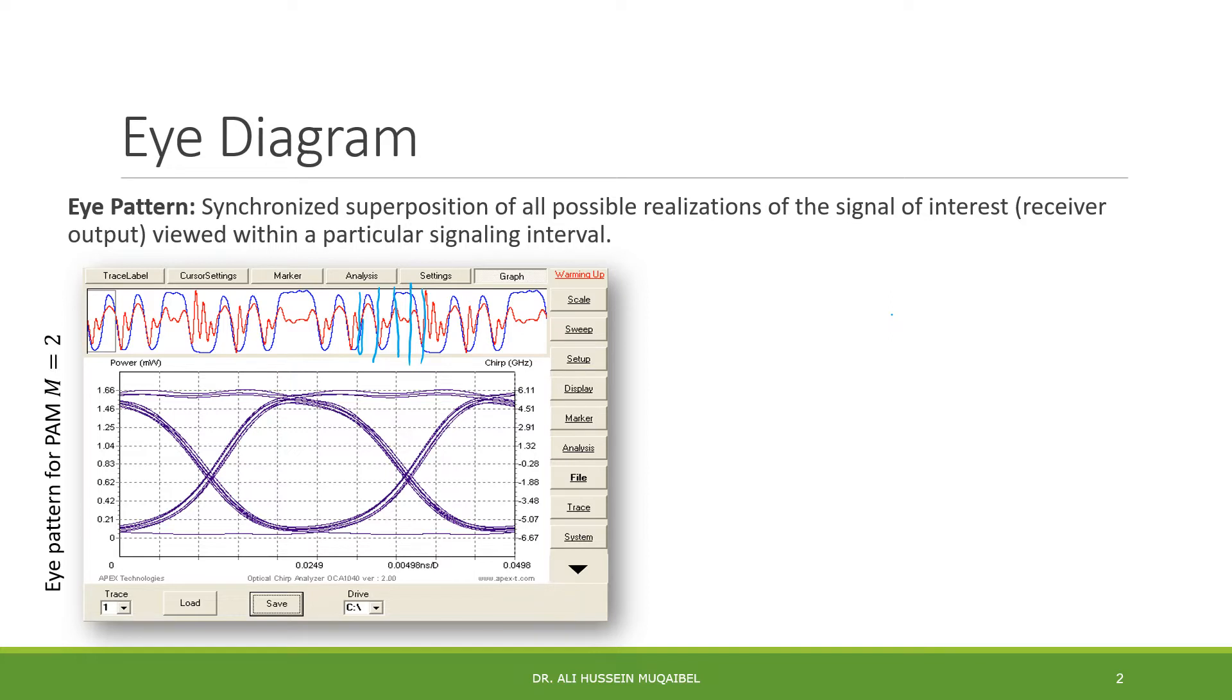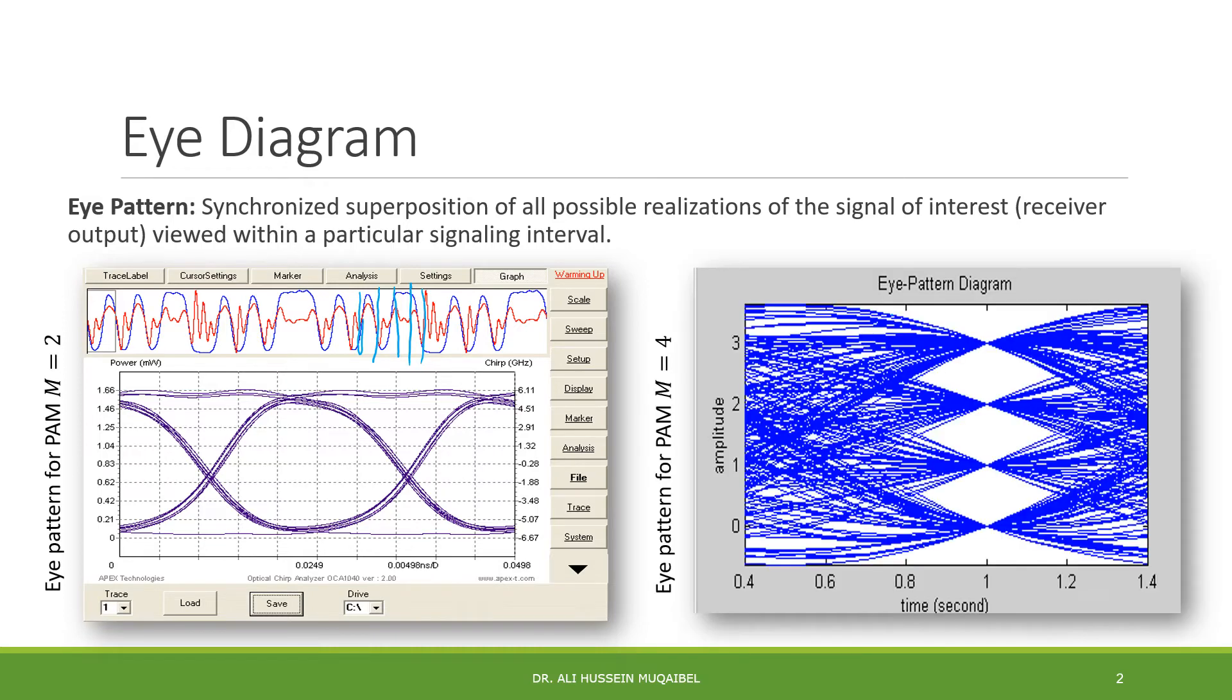This can be used to assess the performance of the network. So this is called the eye diagram where it's a superposition of images superimposed to represent the pulses. Let's see what it means and how it becomes useful. This example that you see in this diagram is for the case of pulse amplitude modulation with M equal to 2. You either send the positive cycle or the negative cycle.